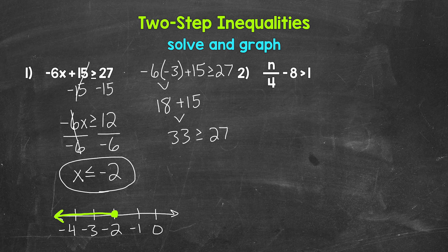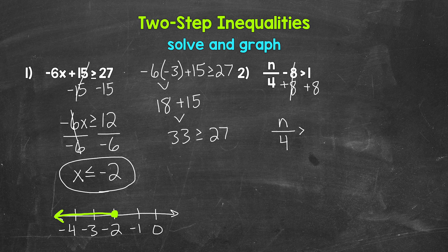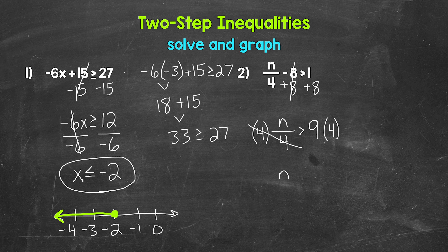Let's move on to number two, where we have n over four minus eight is greater than one. We need to undo the subtraction first using the inverse operation, addition. Add eight to both sides — they cancel on the left, so we have n over four is greater than, and on the right, one plus eight gives us nine. Now we have n divided by four is greater than nine, so we undo that division using multiplication. Multiply both sides by four — they cancel on the left, and nine times four is 36. So n is greater than 36.